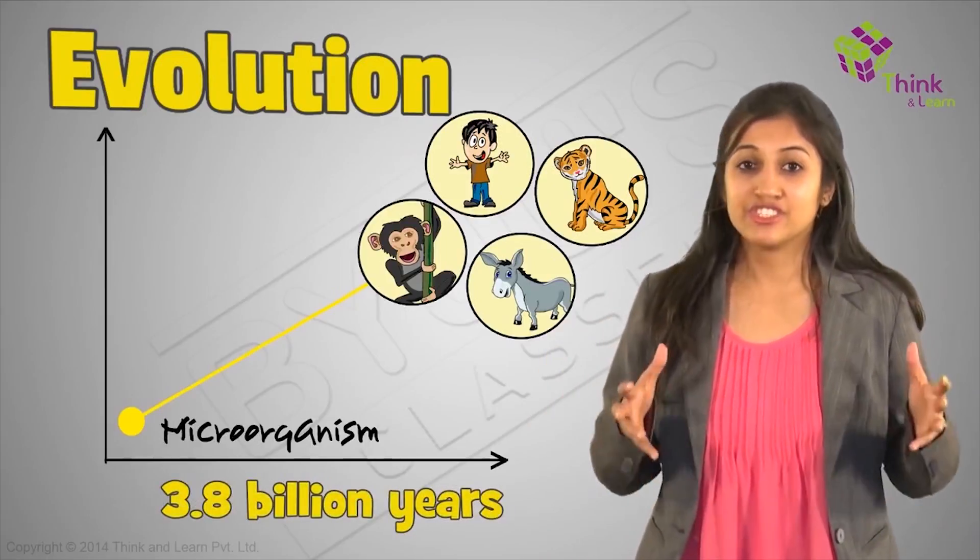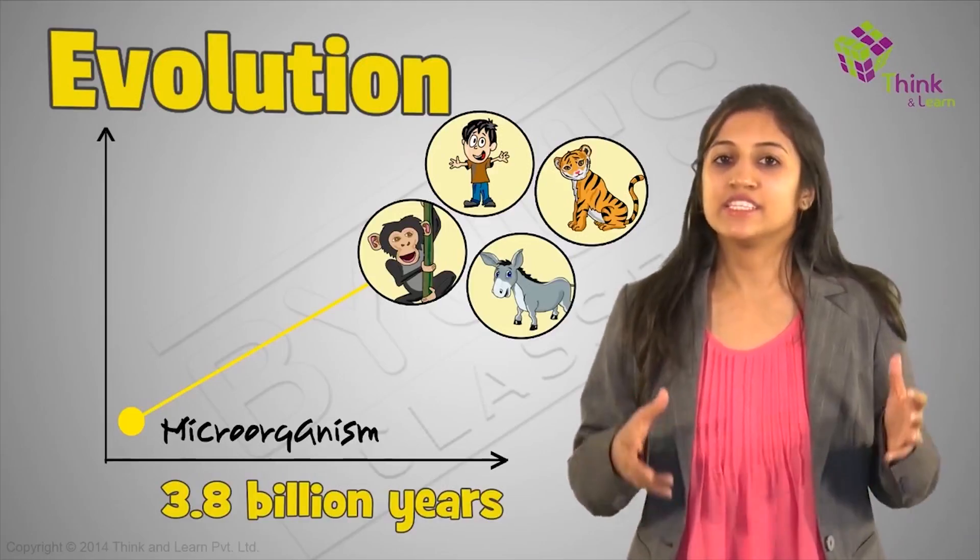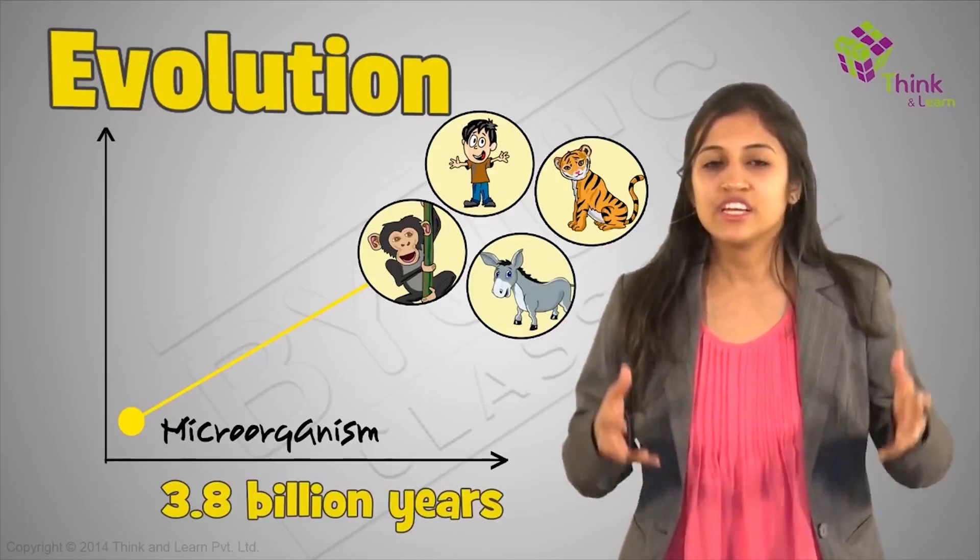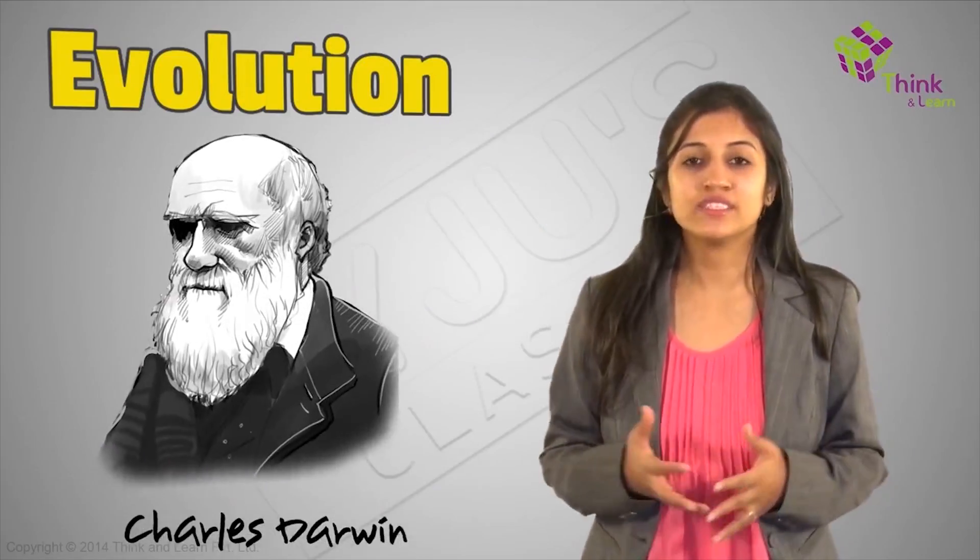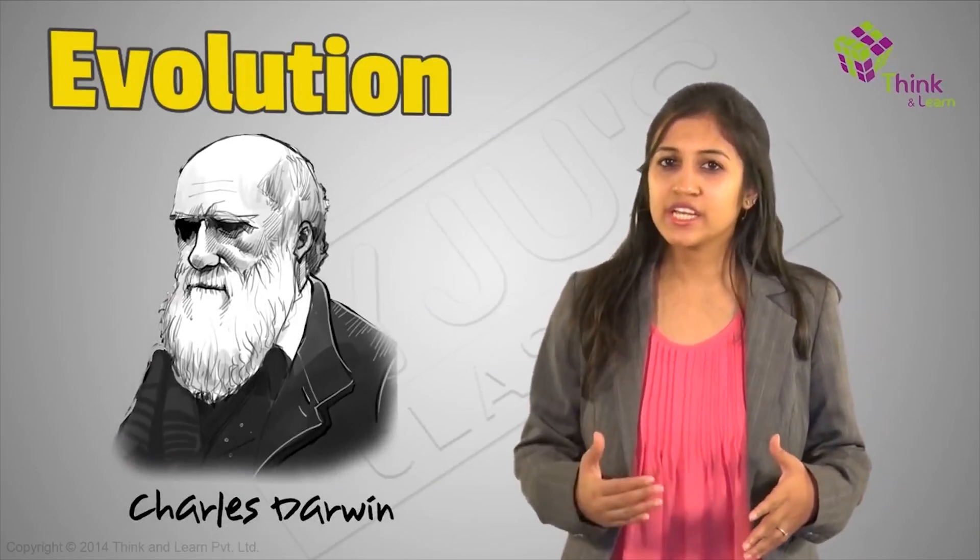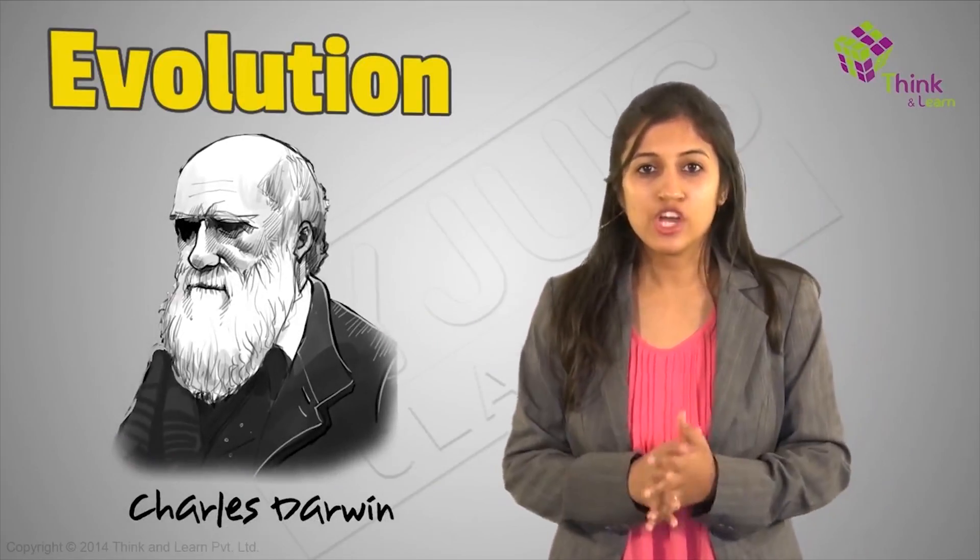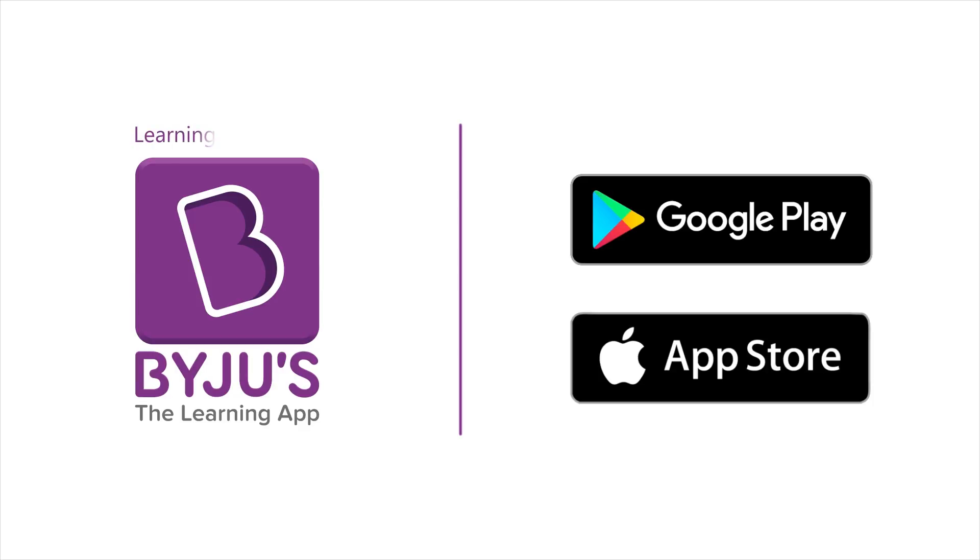Evolution is just a simple fact that the distribution of genes changes over time. And it was Charles Darwin who first tried to explain the theory of evolution. To keep learning with such engaging videos, download Byju's, the learning app today.